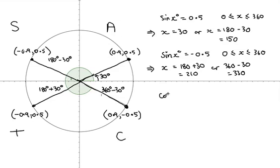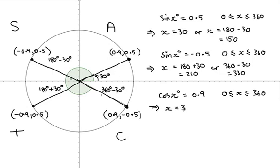Similarly, let's look at cosine. The cosine of x equals positive 0.9. Cosine is the x-coordinate, so it's positive in the first and fourth quadrants — these two positions. We get two solutions: x equals 30, or the fourth quadrant all the way around to 360, backtrack by 30 degrees to get to the position where the x-coordinate is exactly the same as in the first quadrant. So 360 minus 30, which is 330 degrees.